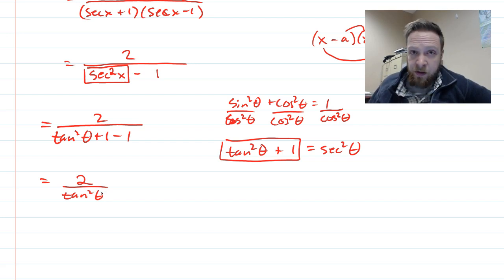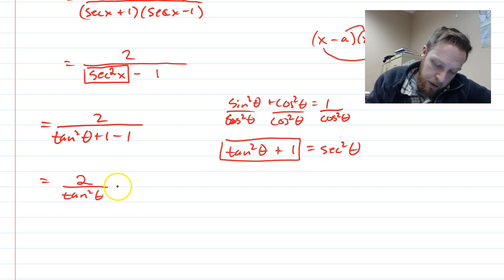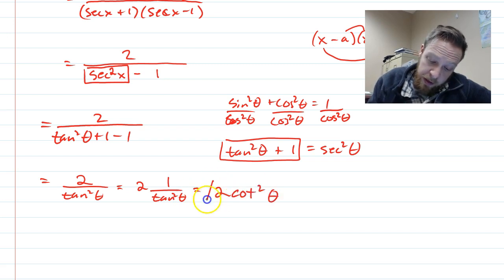And tan squared, if it's on the bottom, you might remember, one over tan is cotangent. So this right here turns out to be two cotangent squared of theta.